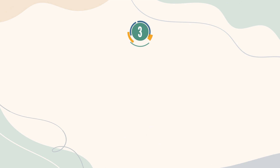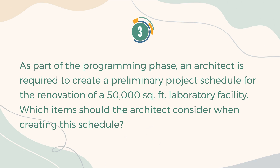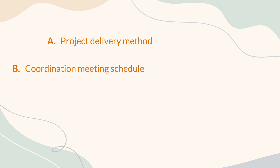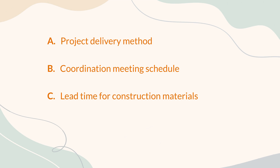Number 3. As part of the programming phase, an architect is required to create a preliminary project schedule for the renovation of a 50,000 square feet laboratory facility. Which items should the architect consider when creating this schedule? A. Project Delivery Method. B. Coordination Meeting Schedule. C. Lead Time for Construction Materials. D. Shop Drawings.